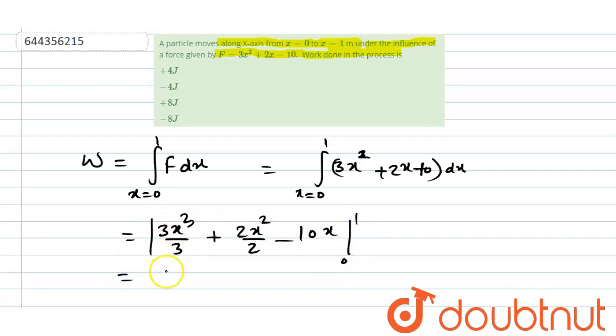Put the values of 1 and 0 in place of x. We get 1 plus 1 minus 10 minus 0. So it will give us a value of work done that is minus 8 joule.